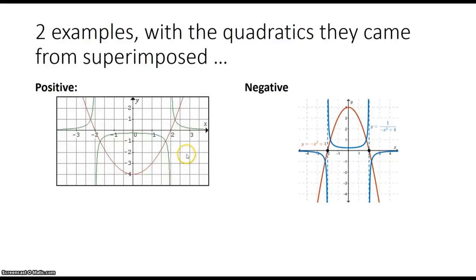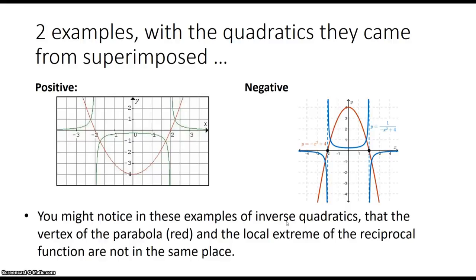You might notice in these examples of inverse quadratics that the vertex of the parabola, shown in red, and the local extrema of the reciprocal, shown in green and blue, are not in the same place. However, the x-coordinates appear to be the same — the y values are very, very different. So the x-coordinate is shared, but the y-value of the extremum is 1 over the y-value of the vertex.